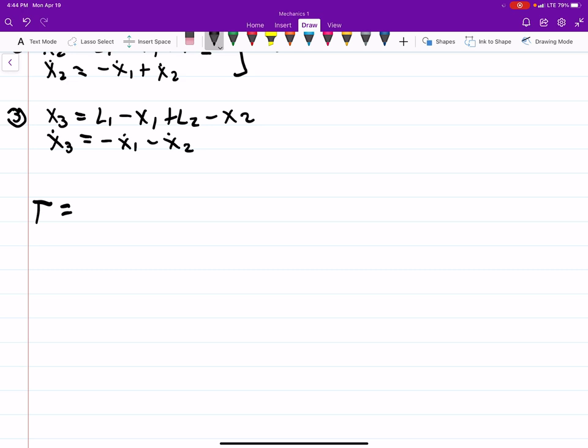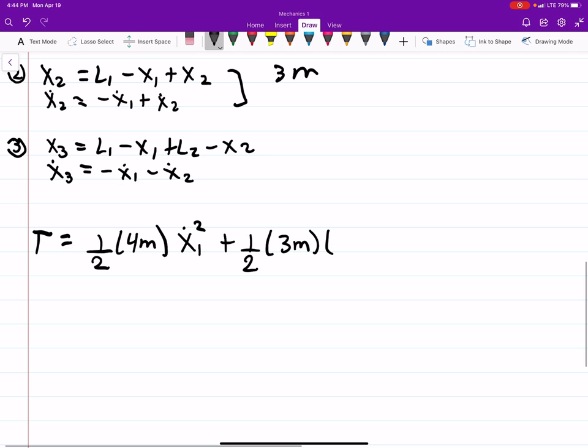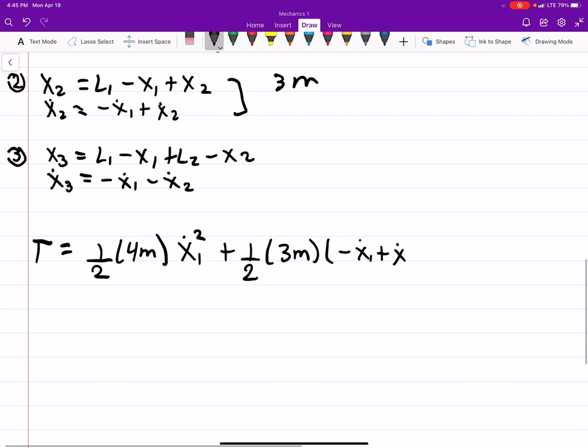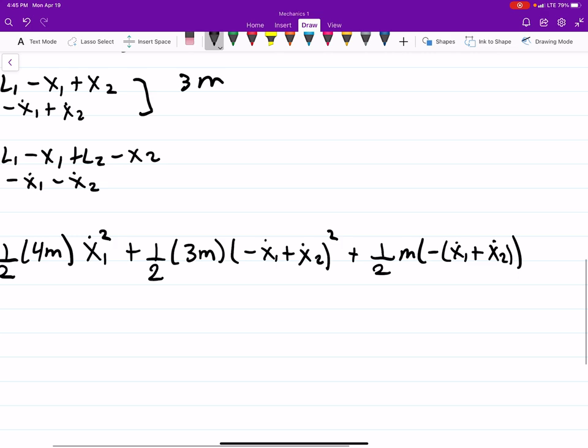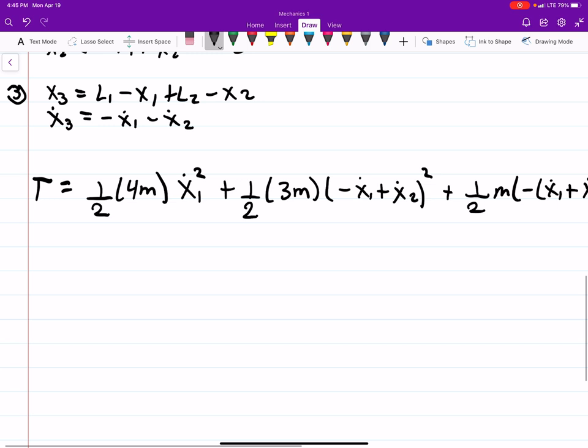So again, we want the kinetic energy of the system. So this is going to be one half, the first mass is 4m, times x1 dot squared, plus the second one, so one half 3m. And then we'll take our second one for the velocity, minus x1 dot plus x2 dot squared, plus then we're going to have one half m. And I'm just going to go ahead and factor out the negative, x1 dot plus x2 dot squared.